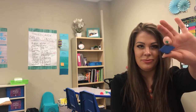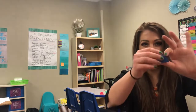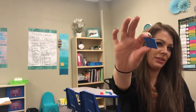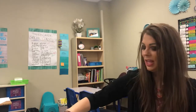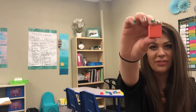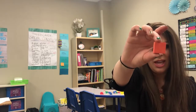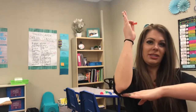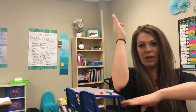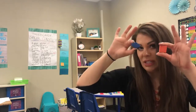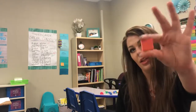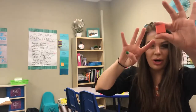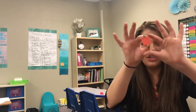Next we have our rhombus. All sides are the same length. And our square — our square has four right angles, which our rhombus did not have. All the sides of a rhombus were equal, but it didn't have those right angles like our square does. Our square has four right angles and all sides are the same length.